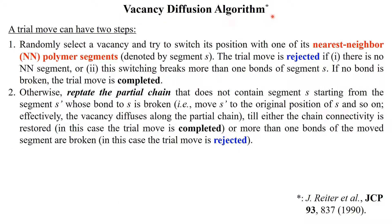As the fractions of vacancies are small, we use the vacancy diffusion algorithm proposed by Brito and coworkers in all simulations. Here, a trial move can have two steps. First, we randomly select a vacancy and try to switch its position with one of its nearest neighbor polymer segments, say segment s. The trial move is rejected if there is no nearest neighbor segment, or this switching breaks more than one bond of segment s. If no bond is broken, the trial move is completed.